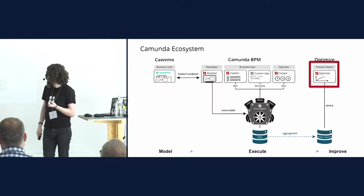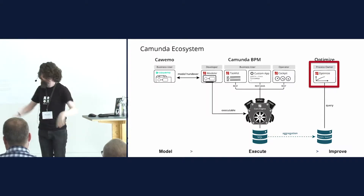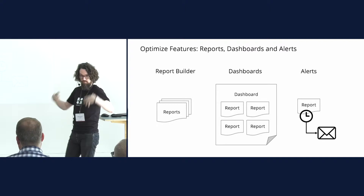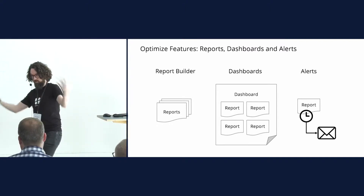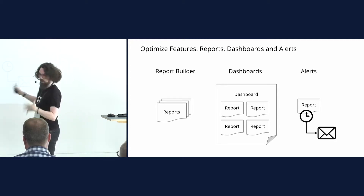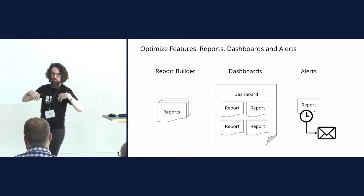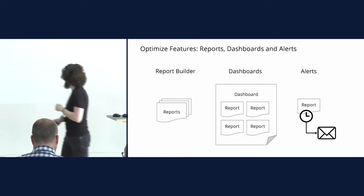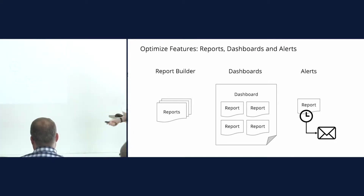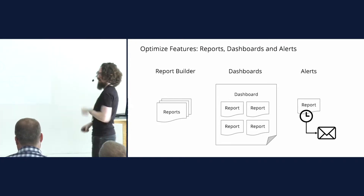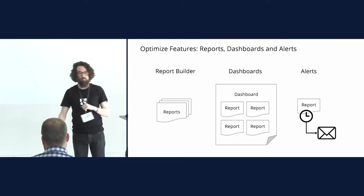To tell you quickly what exactly Optimize does at a very high level: it allows you to build reports — a report builder. You can build all sorts of shapes, sizes, heat maps and things. You can then put those reports into a dashboard where you can view multiple reports in one place and maybe assign to a certain user. You can also create alerts that will actually tell you something based on a report you've designed.